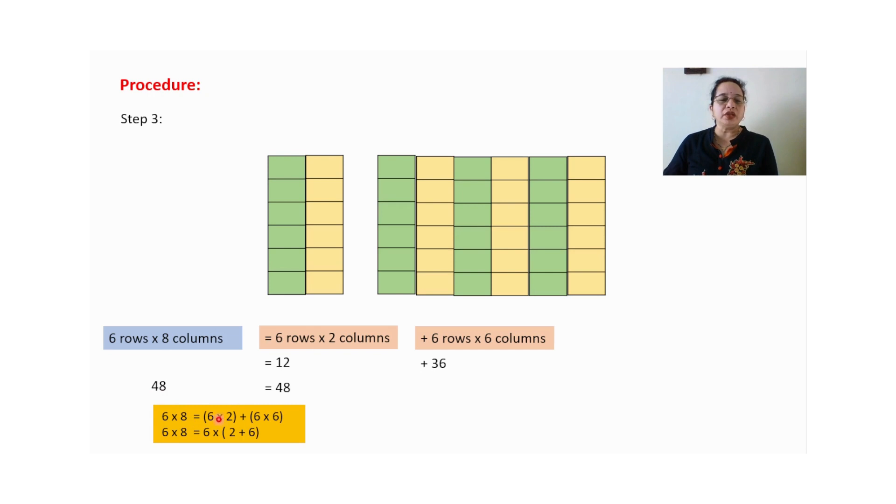Here also I have shown that six multiplied by eight. This is the first thing we have started and now we have six multiplied by two. This pink color box. Six multiplied by six. Another pink color box. Again, you can see that your six is common. Take six common. What is left inside the bracket? Two plus six. This will give you eight. Again, this is distributive property. Two examples I have given for distributive property.